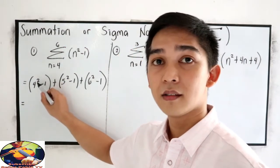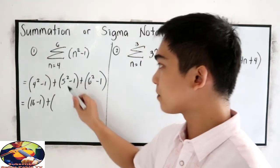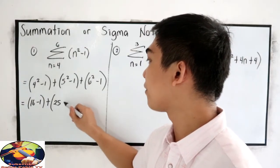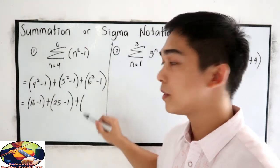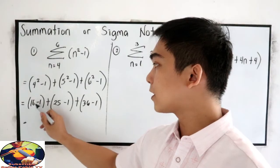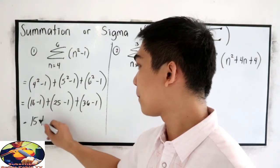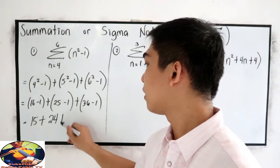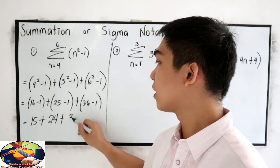4 squared, that is 16 minus 1, plus 5 squared, 25 minus 1, plus 6 squared, 36 minus 1.